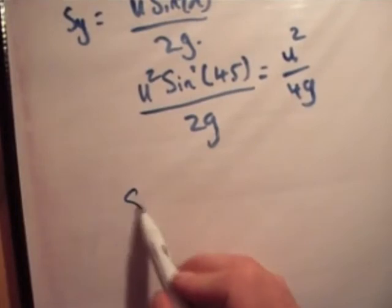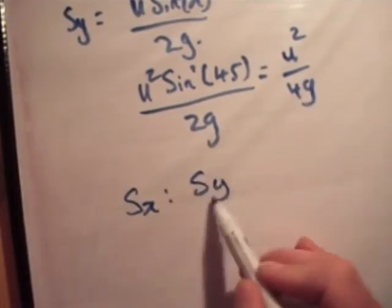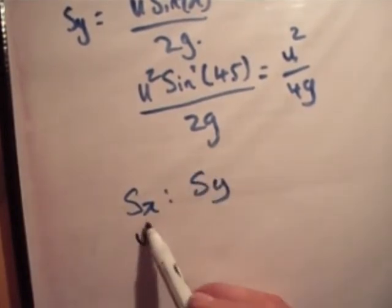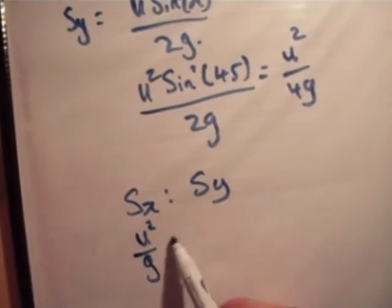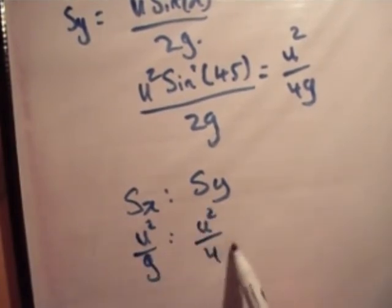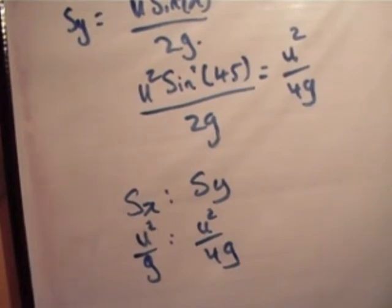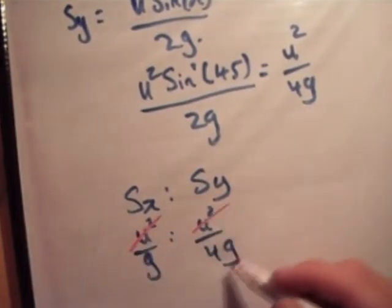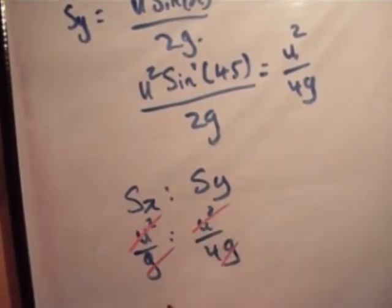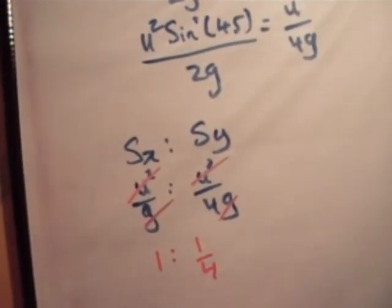So watch this, we had s sub x against s sub y and that we had u squared over g versus u squared over 4g, so we'll just change my biro, cancel what's common. So then you get 1 is to a quarter or 4 is to 1.